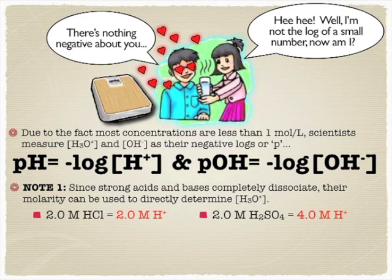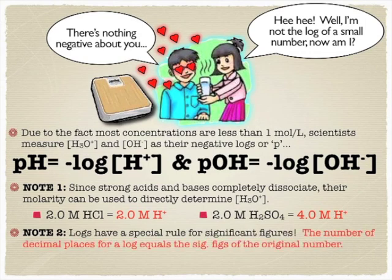Now some things are polyprotic, or in the case of sulfuric acid, diprotic. So remember your rules for dissociation. Two moles of sulfuric acid would dissociate into four moles of hydronium or hydrogen ions. So just keep that in mind when you're dissociating acids.